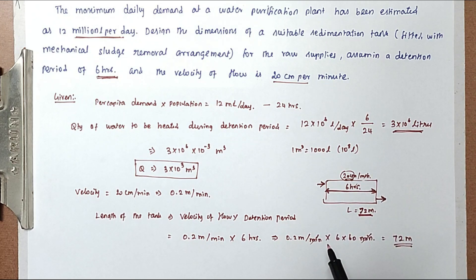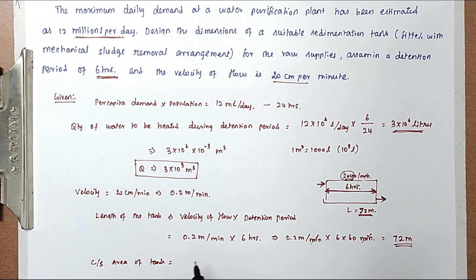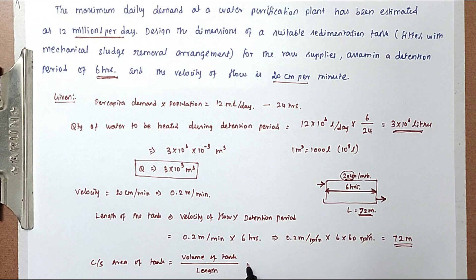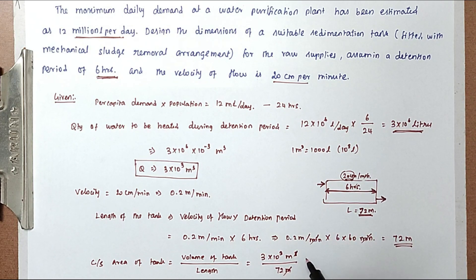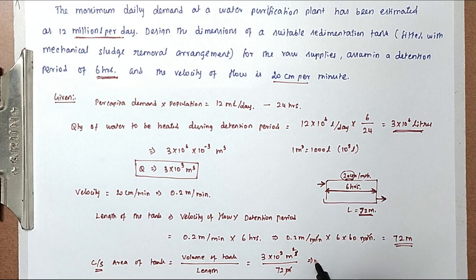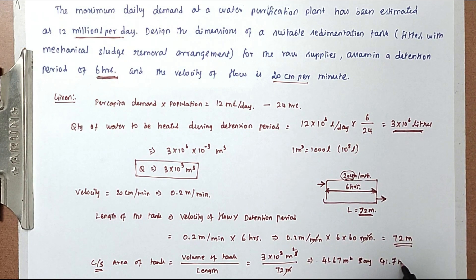From that we can find out the area. Cross-sectional area of the tank equals volume of water to be treated divided by length. Volume is 3 × 10³ m³ divided by 72 meters. The meter and meter cubed cancel to give meter squared. Solving this we get the value of 41.67 m², say 41.7 m².